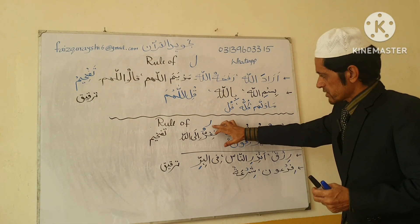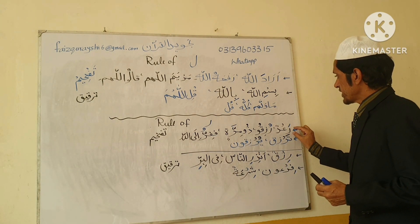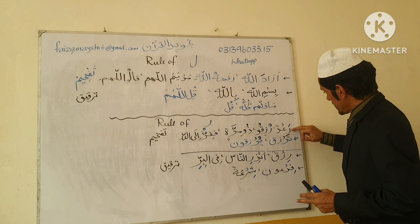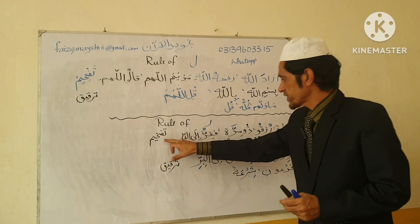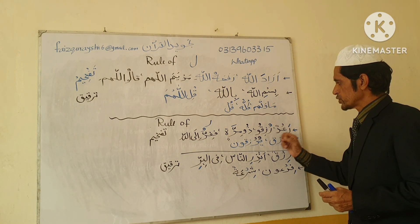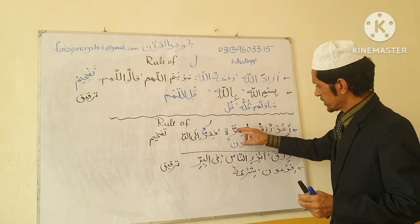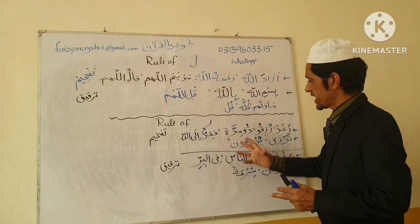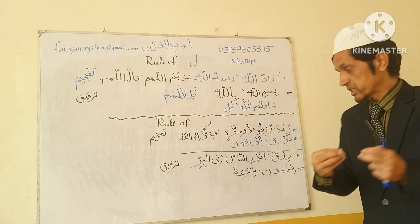Now the rule of Ra. Whenever Ra has Fathah or Dhamma on it, we will make Tafkhim in Ra. For example: 'Ra'dun, Ruziq.' And if Ra has a Shadda, we still consider Fathah or Dhamma on it and read with Tafkhim. We read: 'Ra'dun, Ruziq, Mirratin, Fafiru ila Allah' — this is Tafkhim. Another condition: when Ra is Saakin, we look at the letter before it.